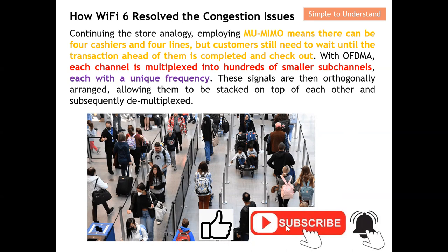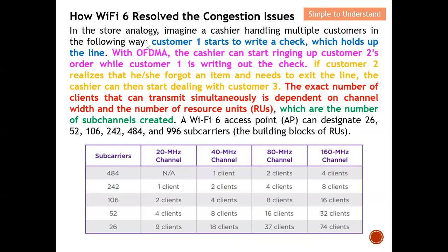Let's move on. In the store analogy for Wi-Fi 6, I'm going to explain how Wi-Fi 6 resolves the congestion issue. Imagine one cashier who can actually take care of multiple customers. For example, customer one starts to write a check, which holds up the line. With OFDMA, the cashier can start ringing up customer two's order while customer one is writing the check. Customer one wants to make payment by check, which takes some time, so the cashier can ring up customer two to come forward while customer one continues writing.